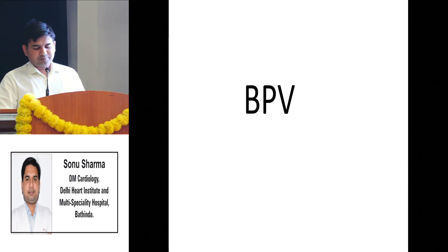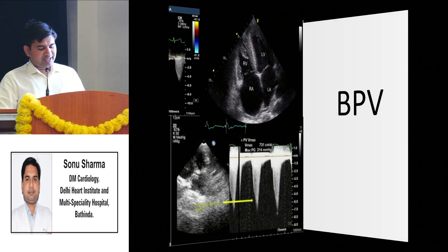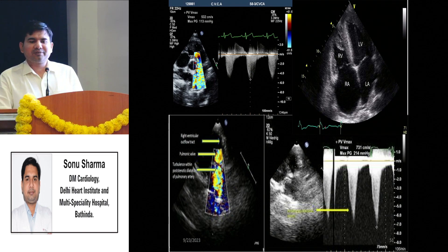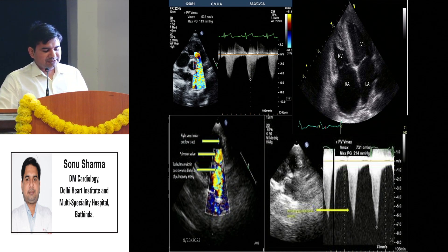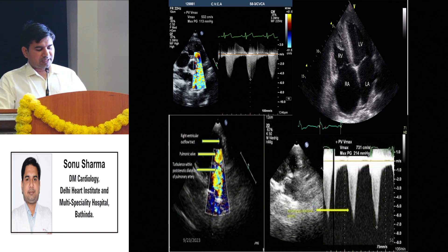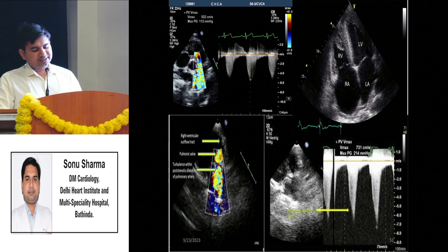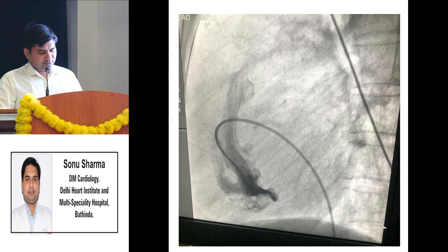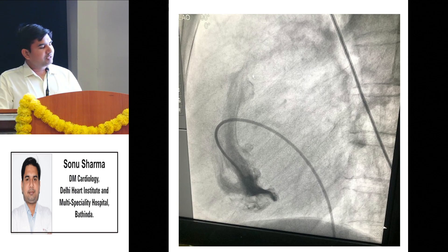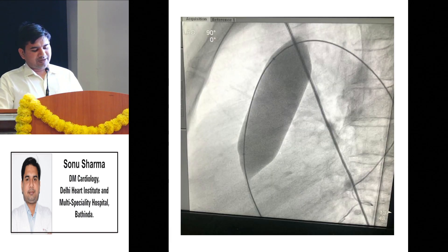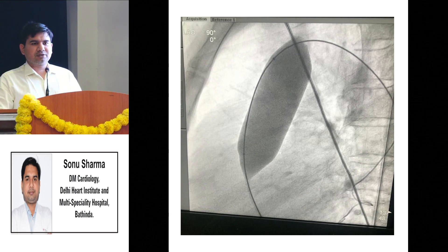For pulmonary stenosis we have balloon pulmonary valvuloplasty (BPV). The patient is diagnosed with severe PS on ultrasound showing RA/RV dilatation with increased gradient across the RVOT. On angiogram there is pulmonary stenosis. After passing a balloon, we just dilate the pulmonary valve, and pulmonary stenosis is cured.